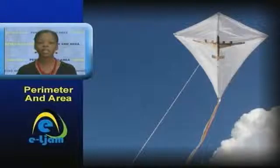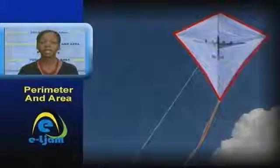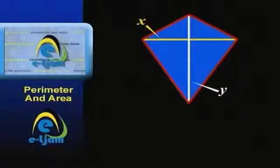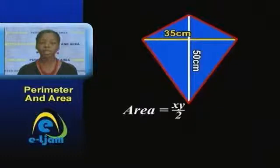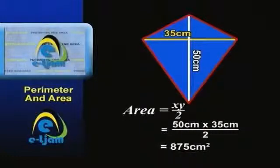A kite is another shape whose surface area we might be interested in knowing — for example, to estimate how much kite paper is needed to make it. The area of a kite can be easily derived using a formula. In finding the area of a kite, we use its diagonals. So if we wanted to know the area of little Johnny's kite, whose diagonals measure 50 centimeters and 35 centimeters, we multiply the diagonals and divide by 2, which gives us an area of 875 centimeters squared.